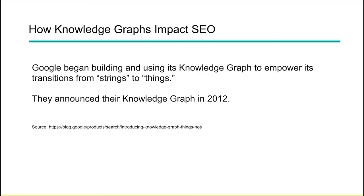So how do knowledge graphs impact search? Google began building and using its knowledge graph really to empower its transition from strings to things, making that shift away from just text and really trying to understand concepts. This is where the idea of entities really started to come into play when it came to SEO. They announced this in 2012, so a lot of us may just be catching up to understanding how we can leverage this ourselves. Knowledge graphs are not just things that can be used by Microsoft, Bing, or Google search, or some of these other big players — we can use them ourselves.